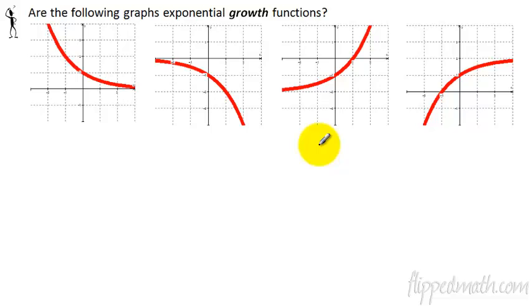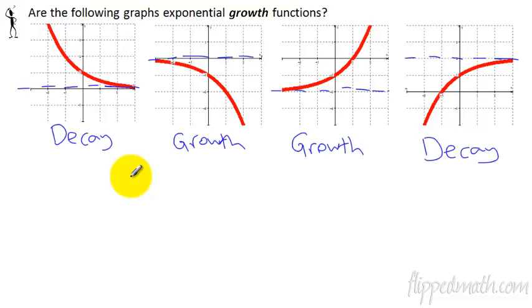So for these graphs, which ones are growth functions? This one, as you move left to right, it's getting, actually, I'm not telling you, pause it, and then I'll have the answers appear. Alright, I tried to have the answers here pop up for you. And the first one was a decay, growth, growth, and decay. So just remember, moving left to right, whether it's growing away from it or decaying closer to the asymptote.